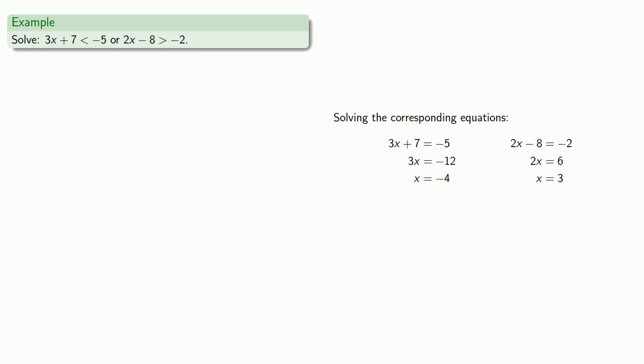This gives us two critical values, so we need to check our critical values. If x equals negative 4, 3x plus 7 less than negative 5 is false.